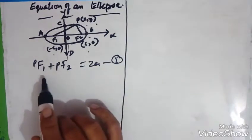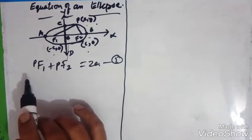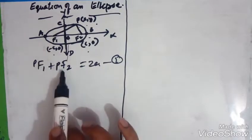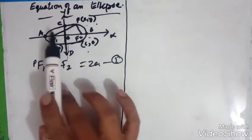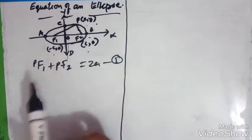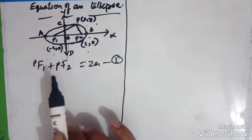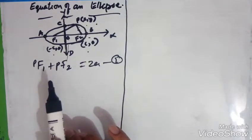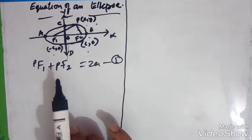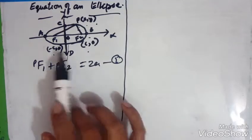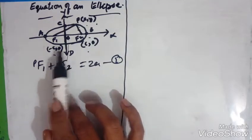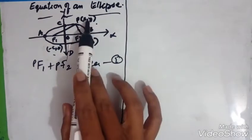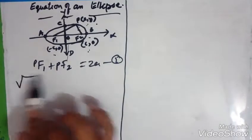Now we will use the distance formula to find the values of PF1 and PF2. The distance formula is √[(x2 − x1)² + (y2 − y1)²]. We have the points (−C, 0) and (x, y) for PF1, and (C, 0) and (x, y) for PF2.